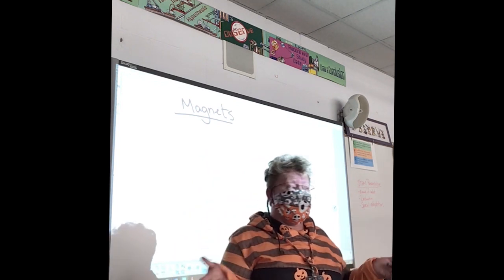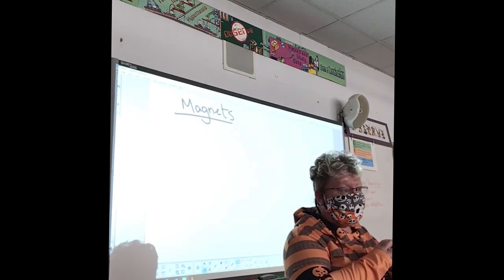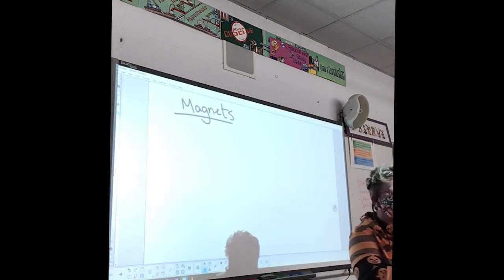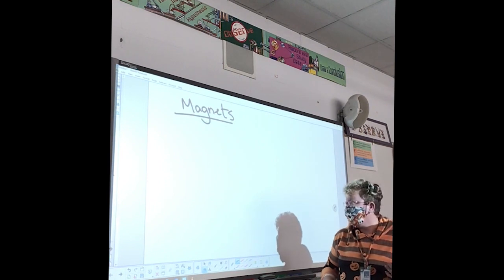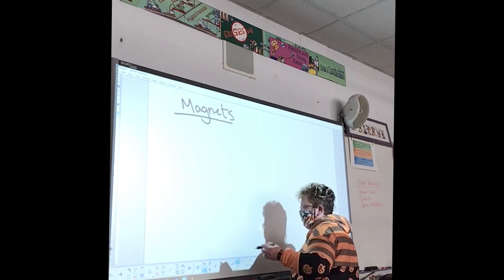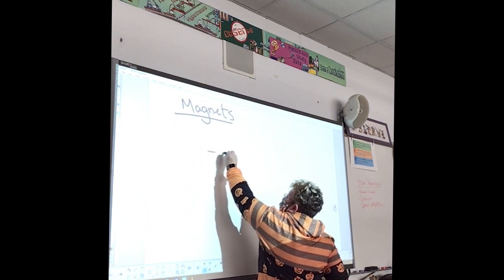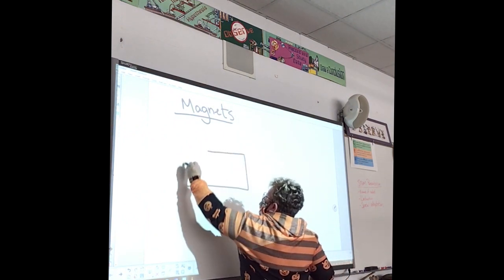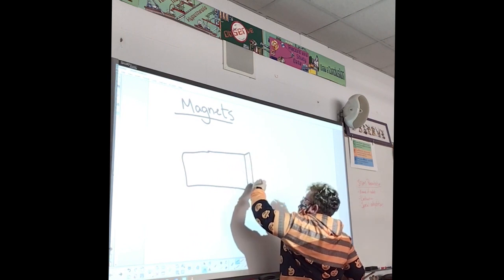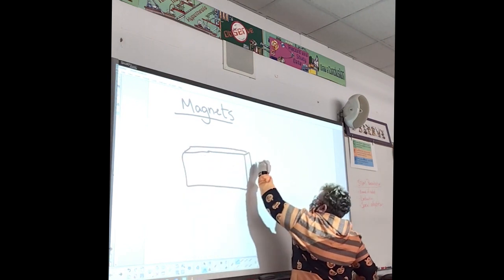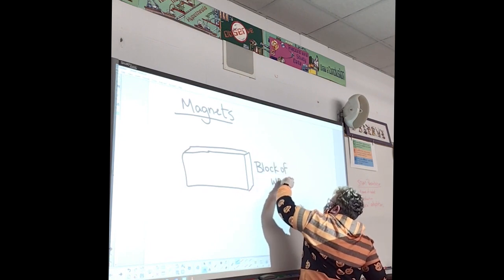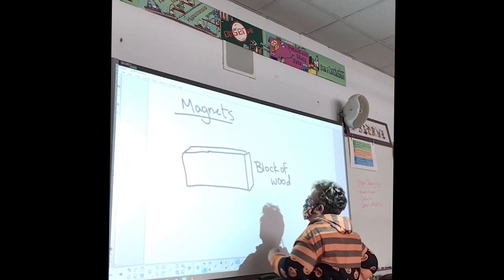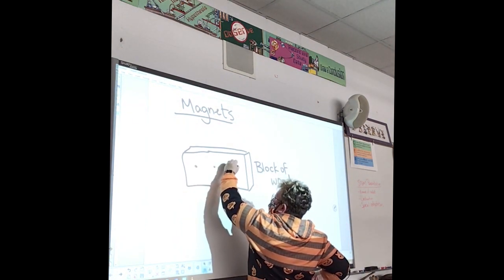For the most part, protons and neutrons just sit there in the nucleus and don't do much, and it's the electrons that do the interactions. They're the ones that cause things to blow up and different things like that. So in most objects, let's say this is a block of wood, you don't have to make it 3D if you don't want. I'll make it 3D.